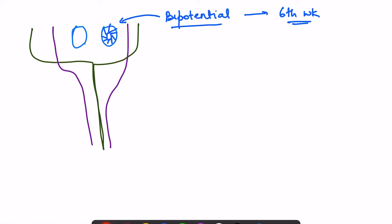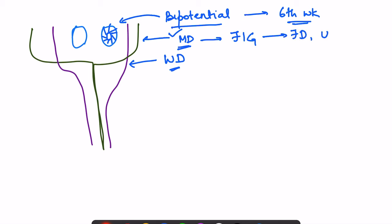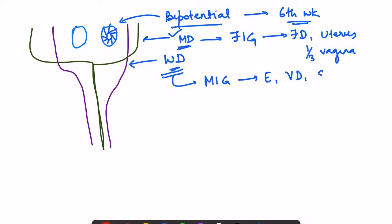We also have the ducts. The purple one shows the Wolffian duct and the green one shows the Mullerian duct. Depending on how development proceeds, either the Mullerian duct will survive — leading to female internal genitals, meaning fallopian tubes, uterus, and upper third of vagina — or the Wolffian duct will survive, forming male internal genitals: epididymis, vas deferens, and seminal vesicles.